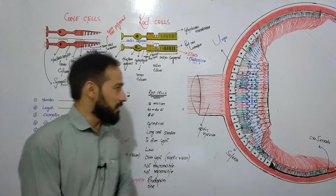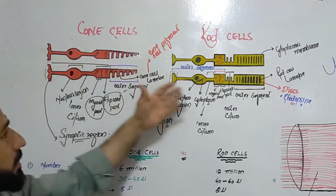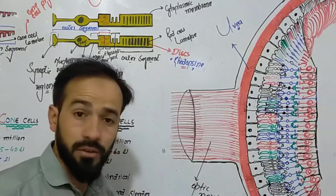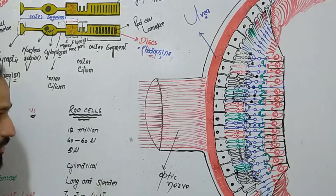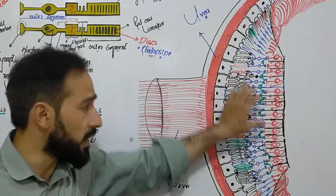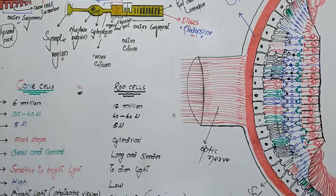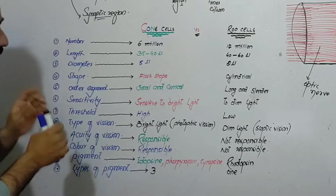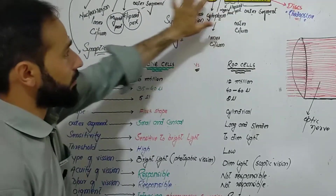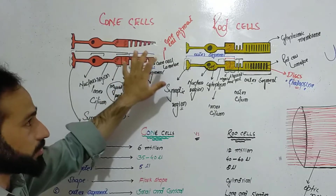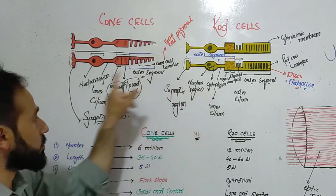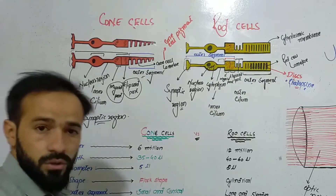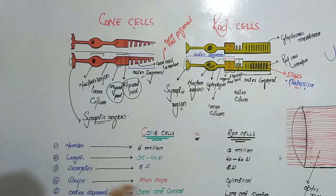Hello friends, welcome back. In the previous lecture I discussed the structure and parts of the rod cells and cone cells. As I told you, rods and cone cells are present in the retina of our eye. In the next lecture I will discuss the whole structure and layers of the retina in detail. Here I have a table showing differences between rods and cone cells. If you haven't watched the previous lecture, I'll give the link in the description — watch that first, then come here for a clear concept of the differences.